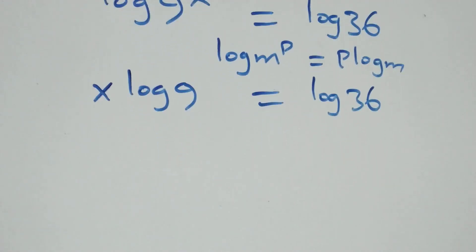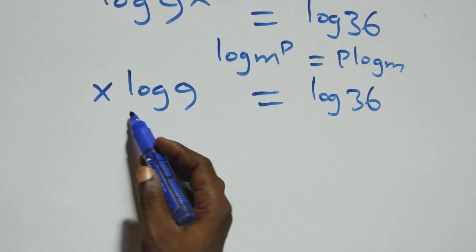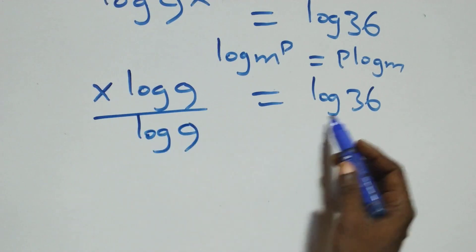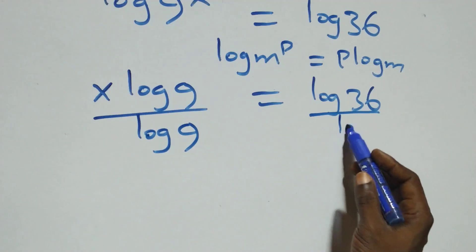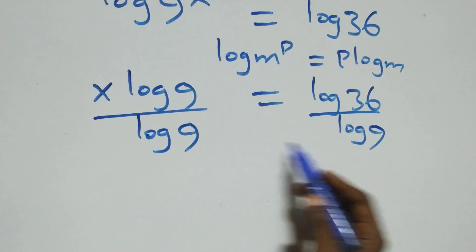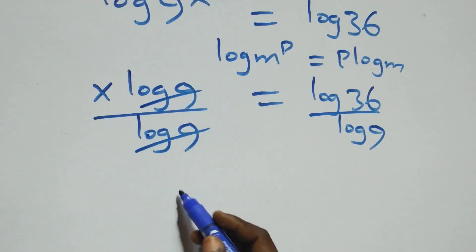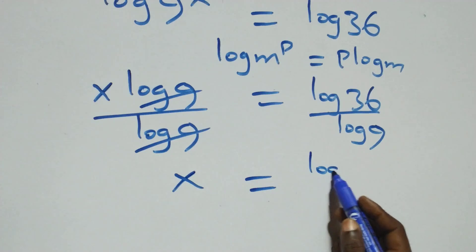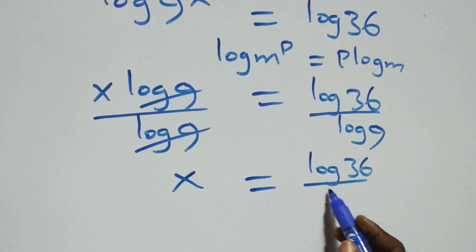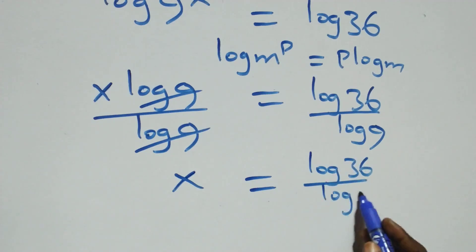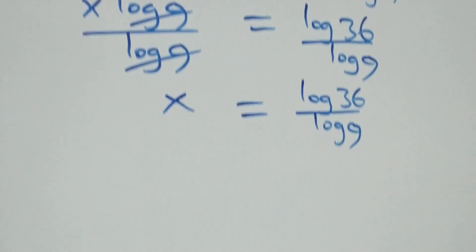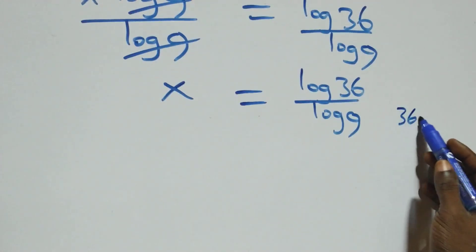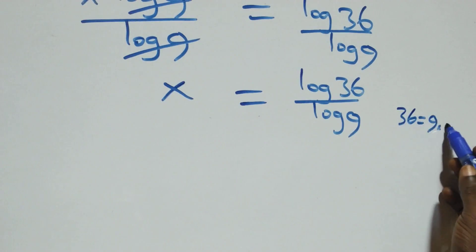The next step, we divide both sides by log 9. The log 9 cancels, leaving x equals log 36 over log 9. Then, we note that 36 is the same as 9 times 4.